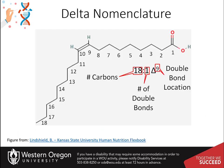There are two fatty acid shorthand notations to be familiar with. The first is the delta nomenclature. The first number indicates the number of carbons in the fatty acid — 18 in this case — then add a colon, and the number after the colon is the total number of double bonds present — 1 in this case. Next, add the delta symbol followed by the positions of the carbon-carbon double bonds in superscript notation next to the delta symbol, separated by commas if there is more than one. The shorthand for this fatty acid is 18:1 Δ9.